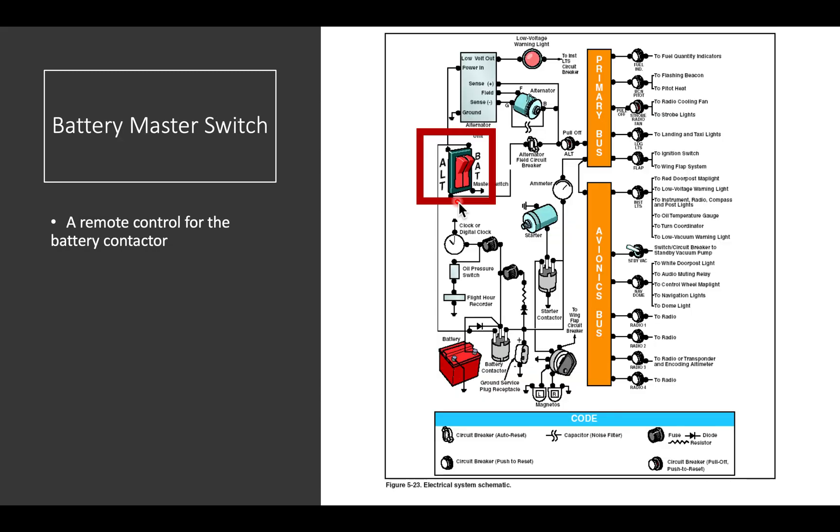The battery master switch you can think of as being a remote control for the battery contactor. When you turn the battery master on, it completes a circuit that turns the battery contactor on, and it, in turn, allows the big current to flow to the bus.